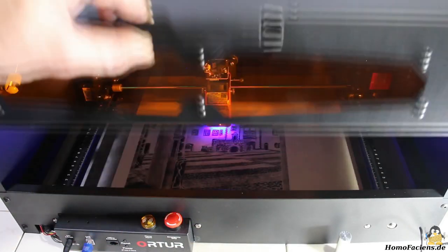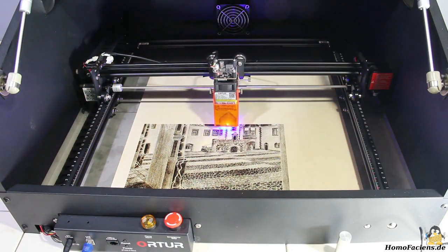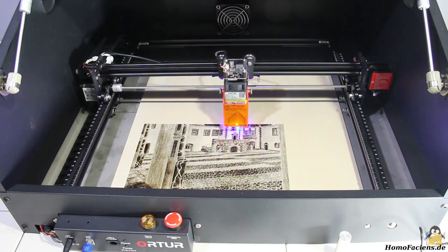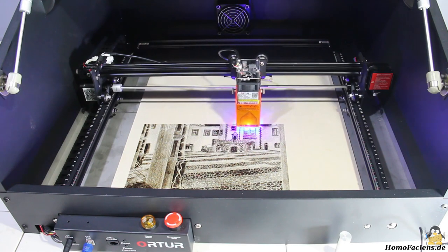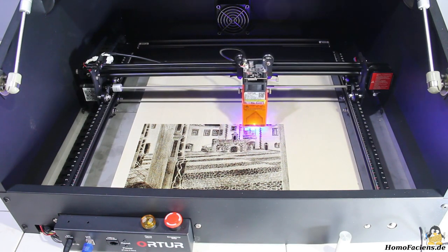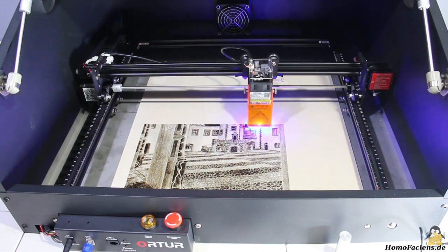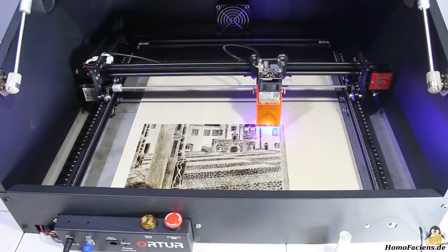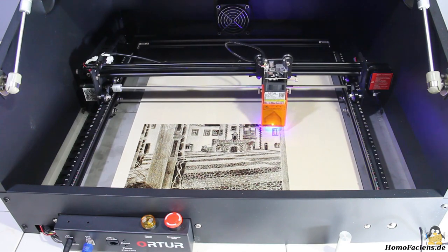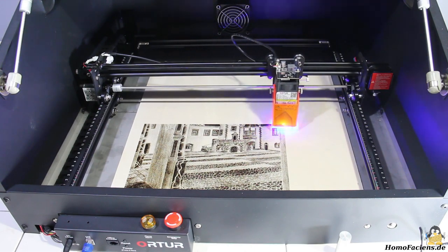In the hands of an experienced craftsman, the Ortur Laser Master is definitely a very versatile tool. As shown here, the laser can be used to transfer graphics onto wood. The Python script processes a bitmap graphic line by line and uses the laser to burn a black dot on the surface where there is a dark pixel in the template.